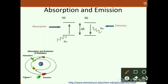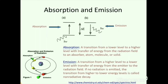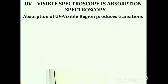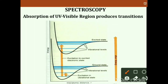When any electron absorbs energy, it shifts from a lower energy state to a higher energy state. In emission, it shifts from a higher energy state to a lower energy state. If no radiation is emitted during the transition from higher to lower energy level, this is called non-radiative decay. Absorption of ultraviolet-visible radiation produces these electronic transitions.